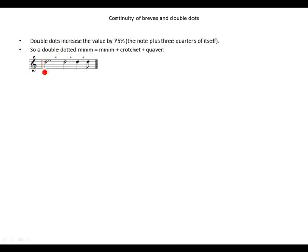This is how we write a double dotted minim. It's a minim and two dots. And when we break it up, we find a minim plus crotchet plus quaver.